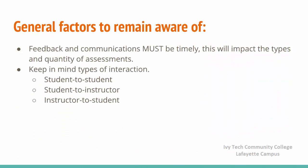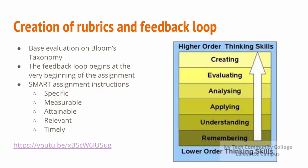As you work through your course, there are a few general factors to remain aware of. First and foremost, feedback and communications must be timely. This will affect the types and quantity of assessments that can effectively be included in a shorter course term. Also keep in mind different types of interaction: student-to-student, student-to-instructor, and instructor-to-student. The feedback loop is critical to student success in any course regardless of the term length.